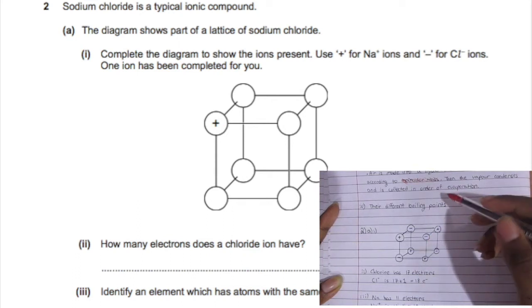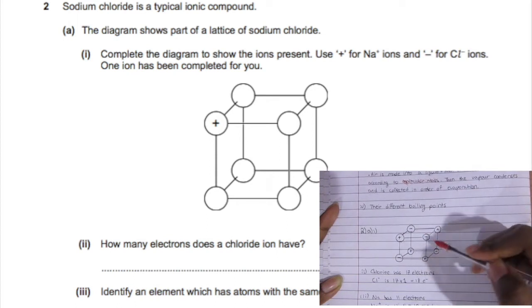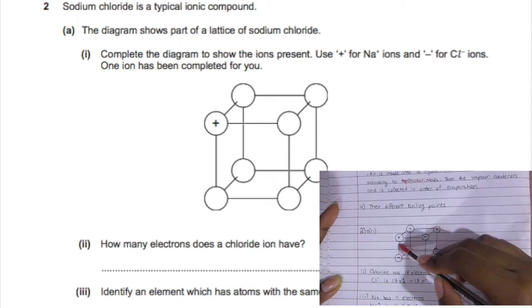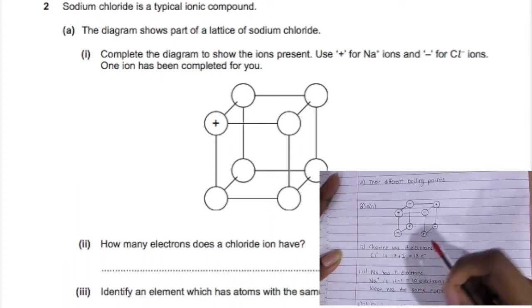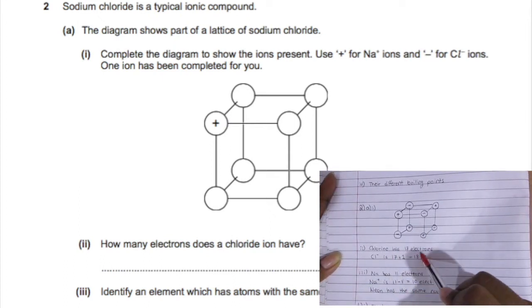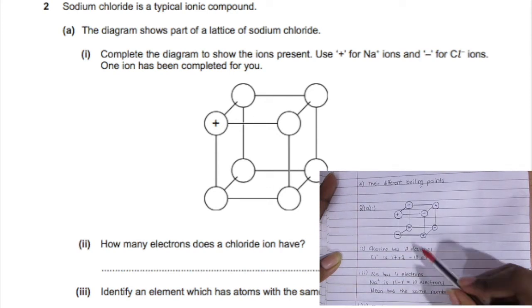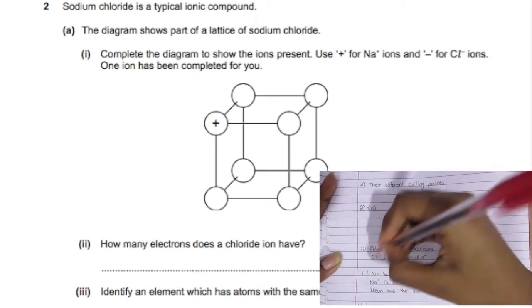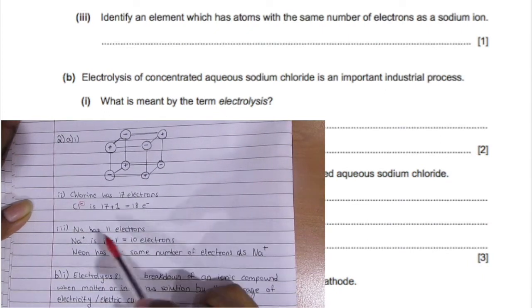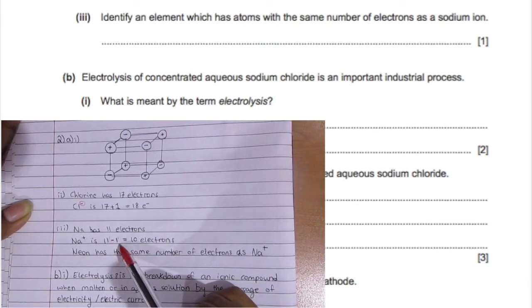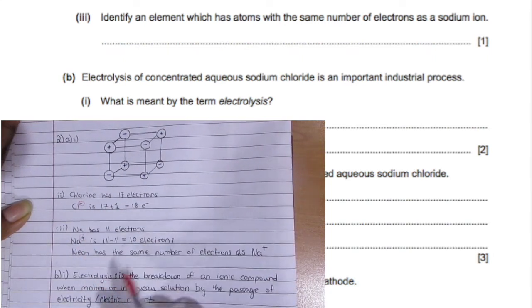How many electrons does a chloride ion have? Chlorine has 17 electrons, and chloride is Cl minus, so it has that extra electron, which would be 17 plus 1, a total of 18 electrons. Now we need to identify an element which has the same number of electrons as sodium ion. Sodium has 11 electrons, the sodium ion is Na plus, so it lost one electron. 11 minus 1 is 10 electrons, and if you check the periodic table, neon has the same exact number of electrons as sodium ion.